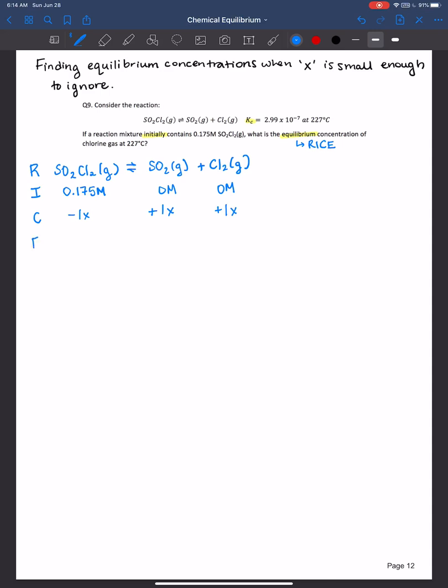All right. So remember to find the equilibrium concentrations, we need to add the initial plus the change for each of them. And so this one is 0.175, the reactant. And then when you add a negative 1x, it's minus 1x. And then the sulfur dioxide is 0 plus 1x, so it just ends up being 1x. And same for chlorine gas, 1x.